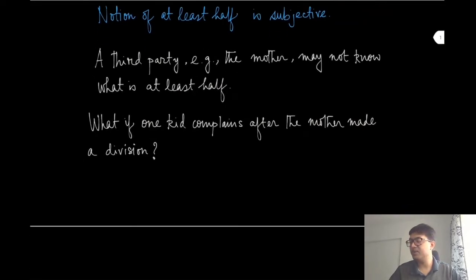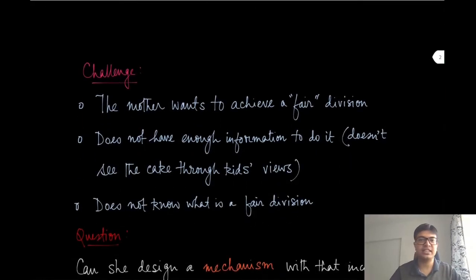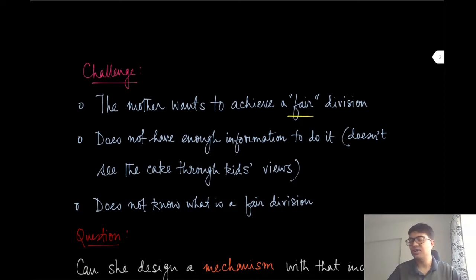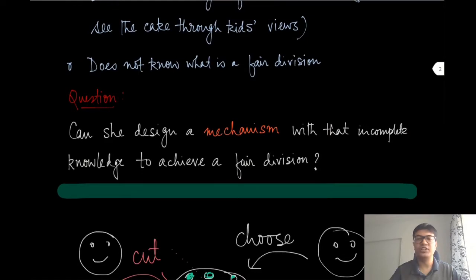This is a kind of a classical, very age-old problem, and therefore it also has an age-old solution. Let us list down the challenges. The mother wants to achieve what we will call a fair division — fair as in envy-free. But the mother does not have enough information to do that fair division; in other words, she does not even know what a fair division looks like. So how can you still do a fair division without knowing this information? This naturally brings us to the situation of mechanism design. Can she design a mechanism that, with this incomplete information, achieves a fair division?